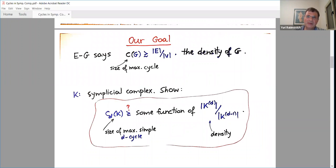This is the theorem that we want to generalize. So what do we want? The Erdős-Gallai theorem says that the size of maximum cycle is at least something which we may call some sort of density of the graph G - the ratio between the edges and the vertices. And what we want is to prove something for d-dimensional cycles: that the size of maximum simple d-cycle is at least some function of the density, the suitable density of the k-dimensional complex. This is our goal. That's what we want to do.